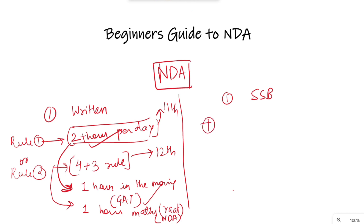This is a very important tool. First of all you have to focus on 2-3 things. Number one is spoken English — that is very important. Many people say that spoken English is not important, but it is very important. Because if you go with weak spoken English to the SSB interview, you will see many candidates speaking very fluently and your confidence will automatically go away. So if you speak English fluently, you will be confident and you will perform better.